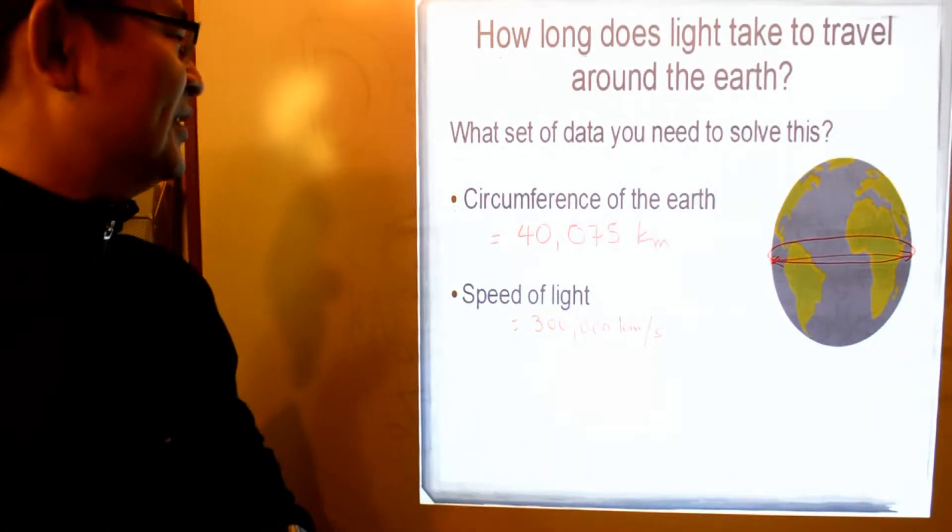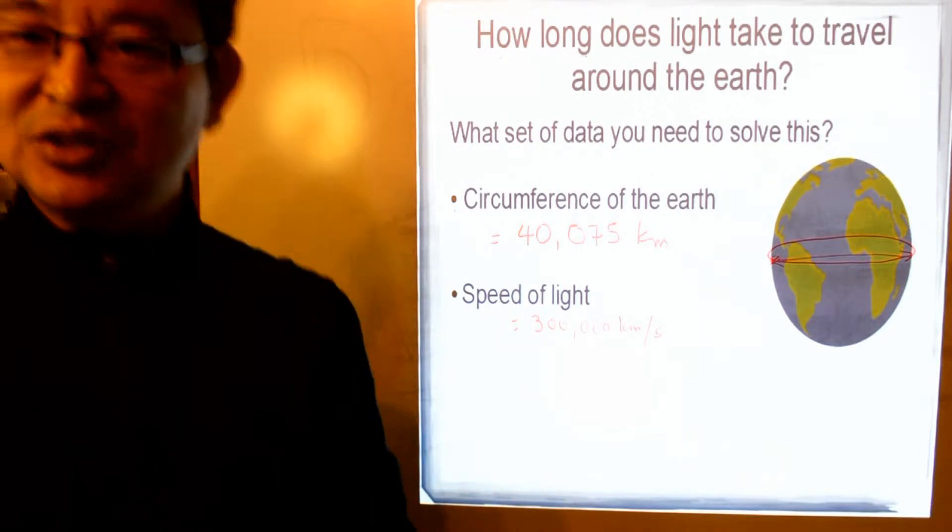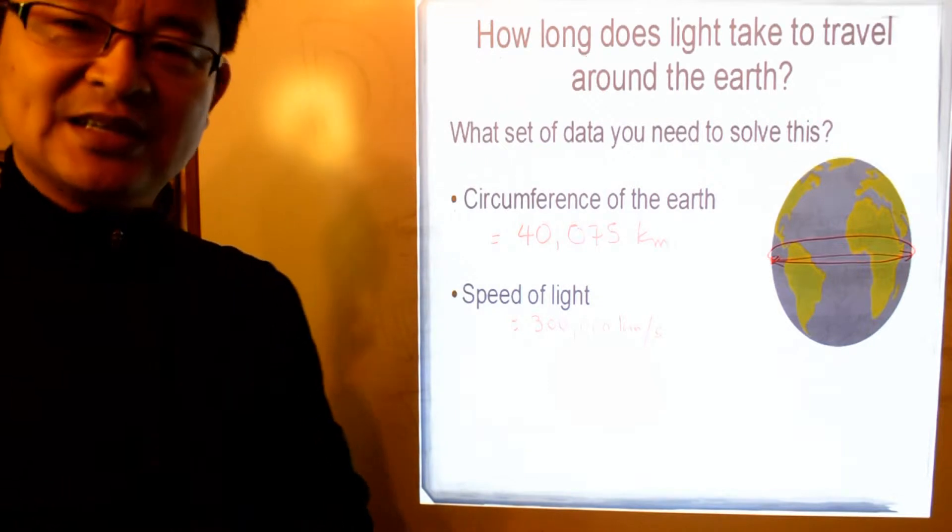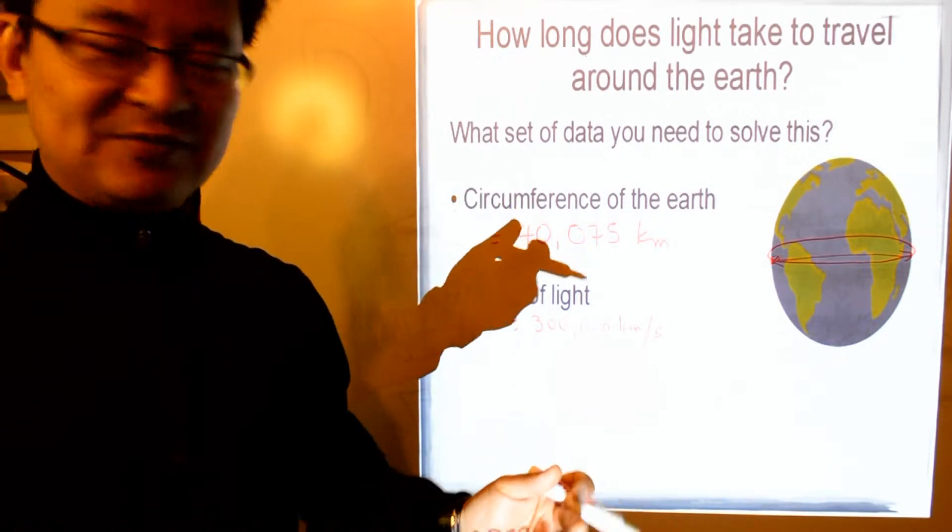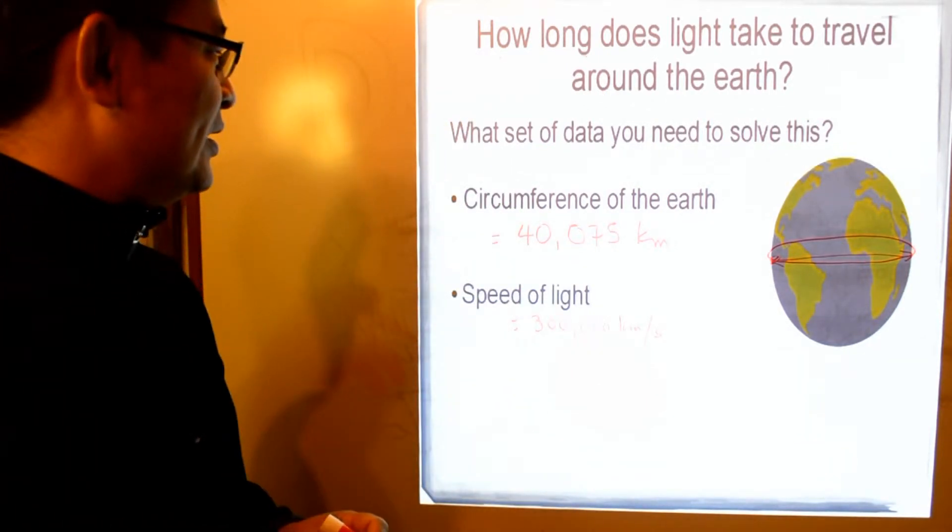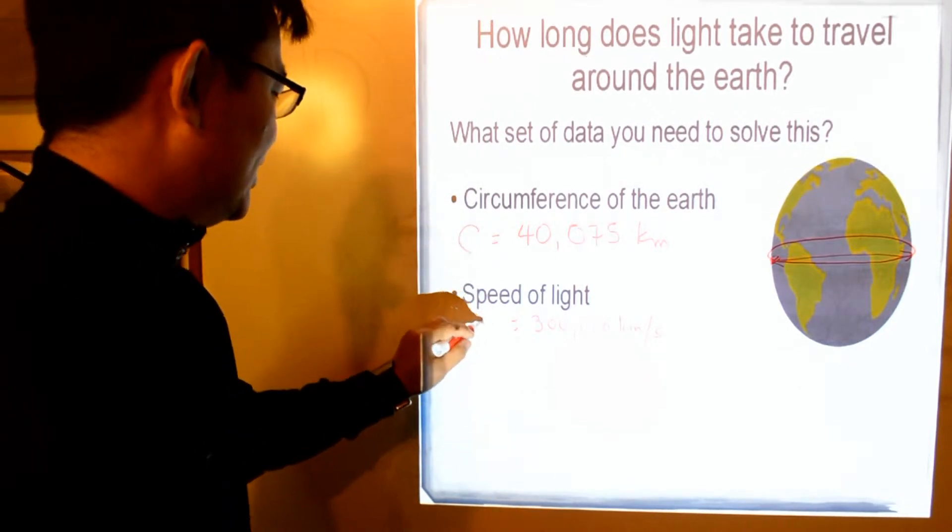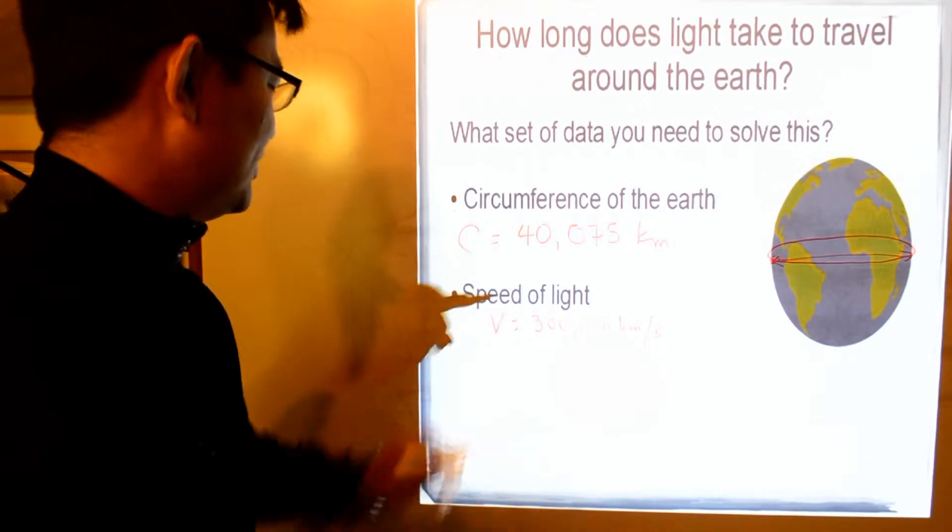So these two sets of data will help us solve this question. The question is, how do we take the data and find the answer? Well, if you look at the set of data we have, the circumference, and the speed, we'll call it V for now.